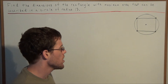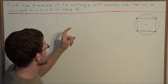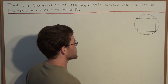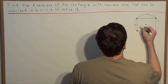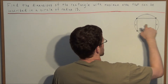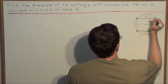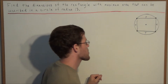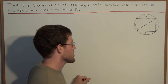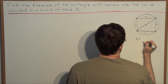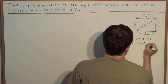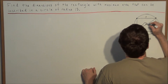For this problem we want to get a strong visual of what the problem is asking. We're trying to maximize the area of a rectangle inscribed in a circle of radius 13. We have some arbitrary rectangle — we label the length x and the width y, filling in all sides accordingly. We draw in the diagonal, which is made up of two radii, building a diameter. The length of this diameter is 13 plus 13, so we have a diameter of 26.